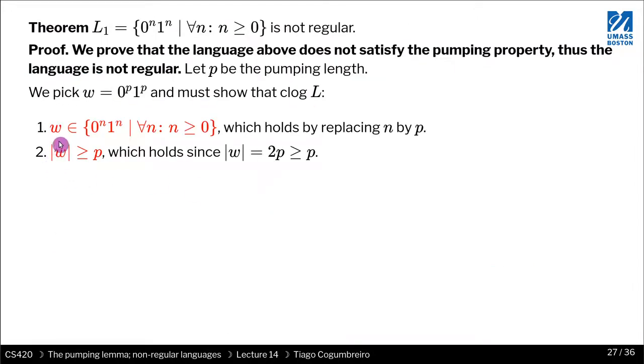So showing that the word is in L₁ is easy because the number of zeros is the same as the number of ones. So this would be an easy proof to make. Secondly, we must show that W, the length of the string we chose, which is 0 to the P and 1 to the P, is greater or equal than P, which holds because as we know, there are two P's. So there are P zeros and P ones. So the length of W is in fact 2P, which is greater or equal than P.